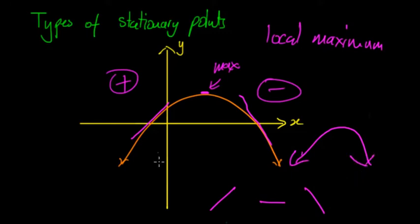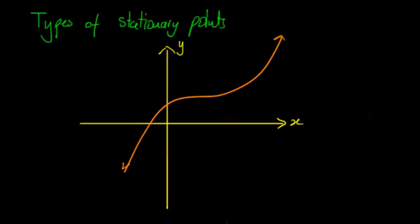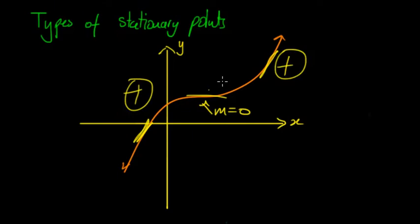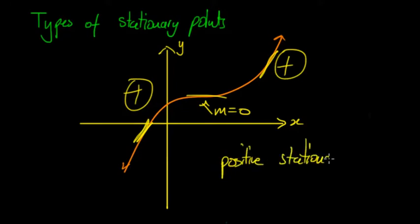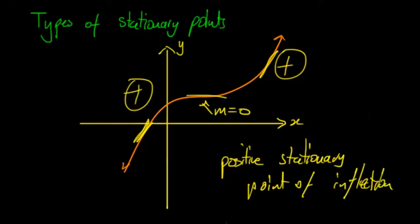That's basically what the first derivative test is, and we'll go through that more later. Those are the first two types. What about when we have a graph where m equals zero at a point, but on the left-hand side the gradient is positive and on the right-hand side it's also positive? It can't be a maximum or a minimum point. This is called a positive stationary point of inflection — because on either side the gradient is positive.